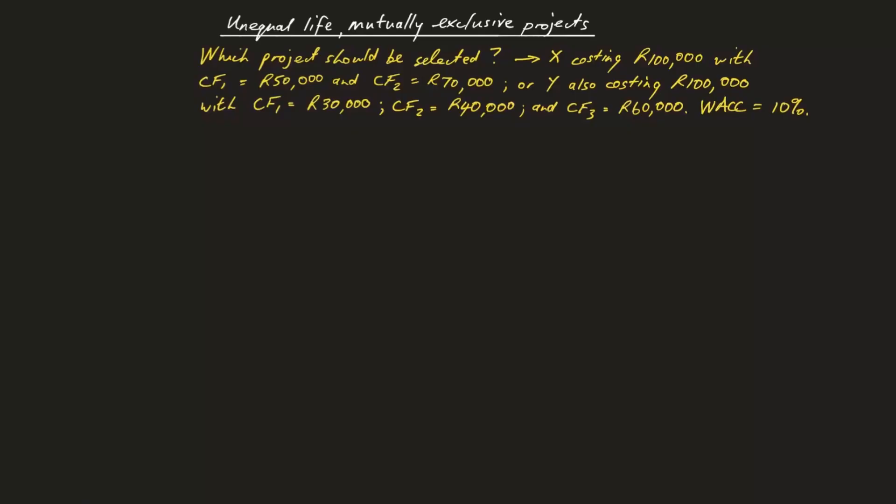Let's look at an example. We stay with two-year Project X and three-year Project Y, adding some detail to these two mutually exclusive replacement chain projects. Both projects cost R100,000. Project X is expected to generate cash flows of R50,000 and then R70,000 over two years. Project Y's three-year cash inflows will be R30,000, then R40,000 and finally R60,000. The weighted average cost of capital is 10%.